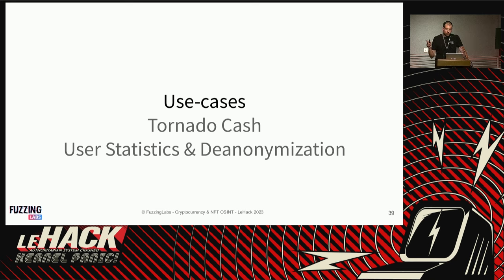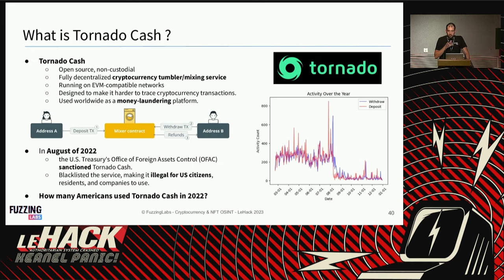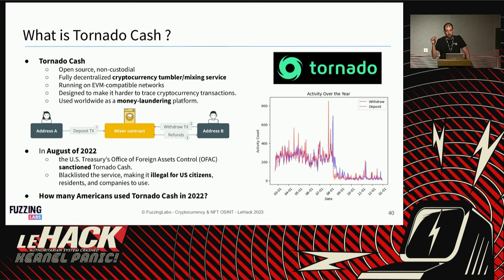Tornado Cash is a major subject in this domain. People try to find who sent money and who received it, linking the two. But what people forget is that since it's becoming illegal in the US, just being an input or output in Tornado Cash is already an issue. Tornado Cash is a mixing contract: address A sends money to the contract, a secret note is generated, and later address B withdraws by providing the note.